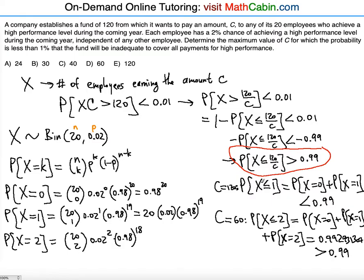When C equals 60, the condition is satisfied — the cumulative probability for these three cases is indeed greater than 0.99. You might ask whether C equals 40 would also satisfy the condition; yes, it would, but 40 is not the maximum value of C. We want the maximum possible, so we stop at 60. The correct answer choice is D.